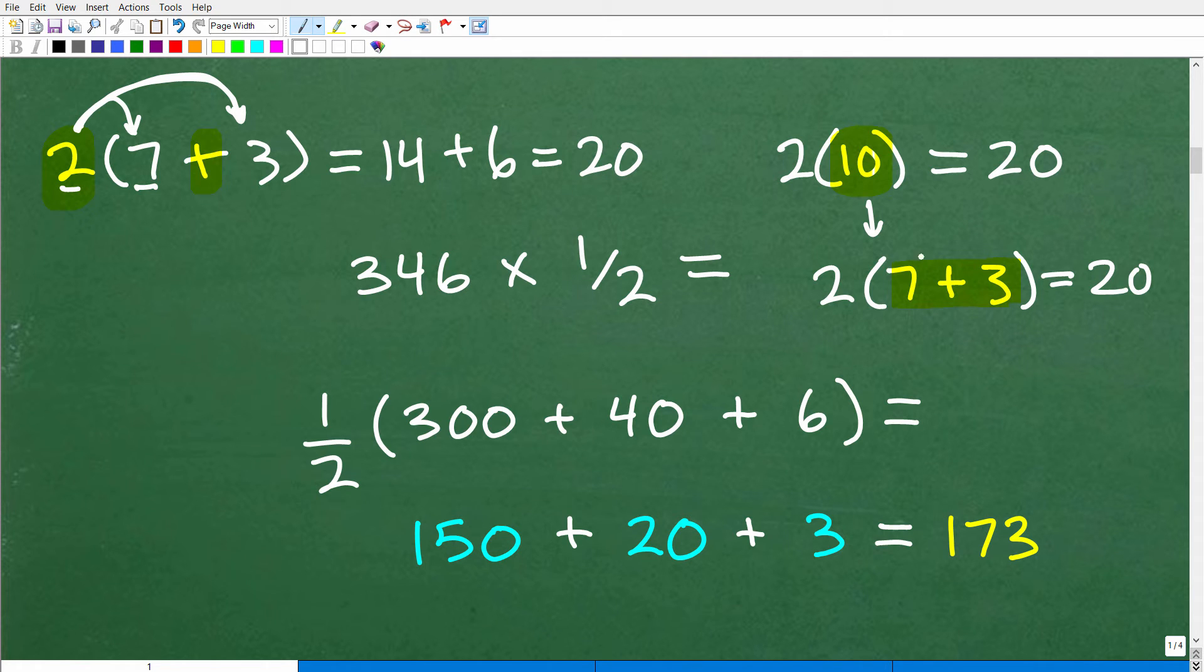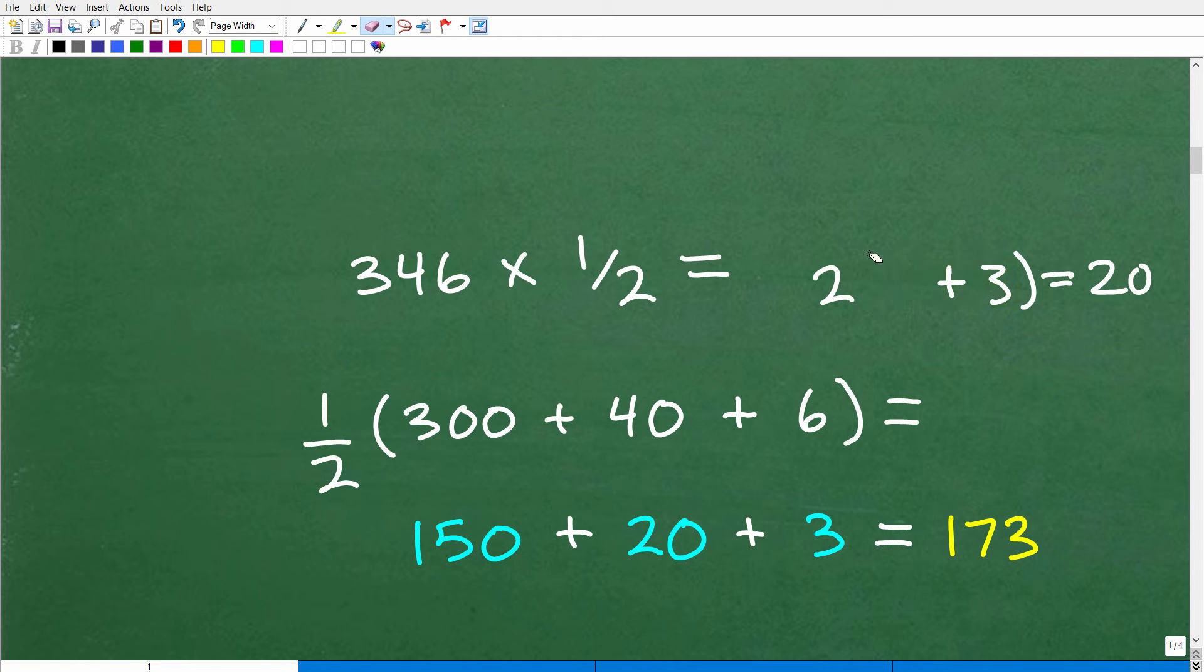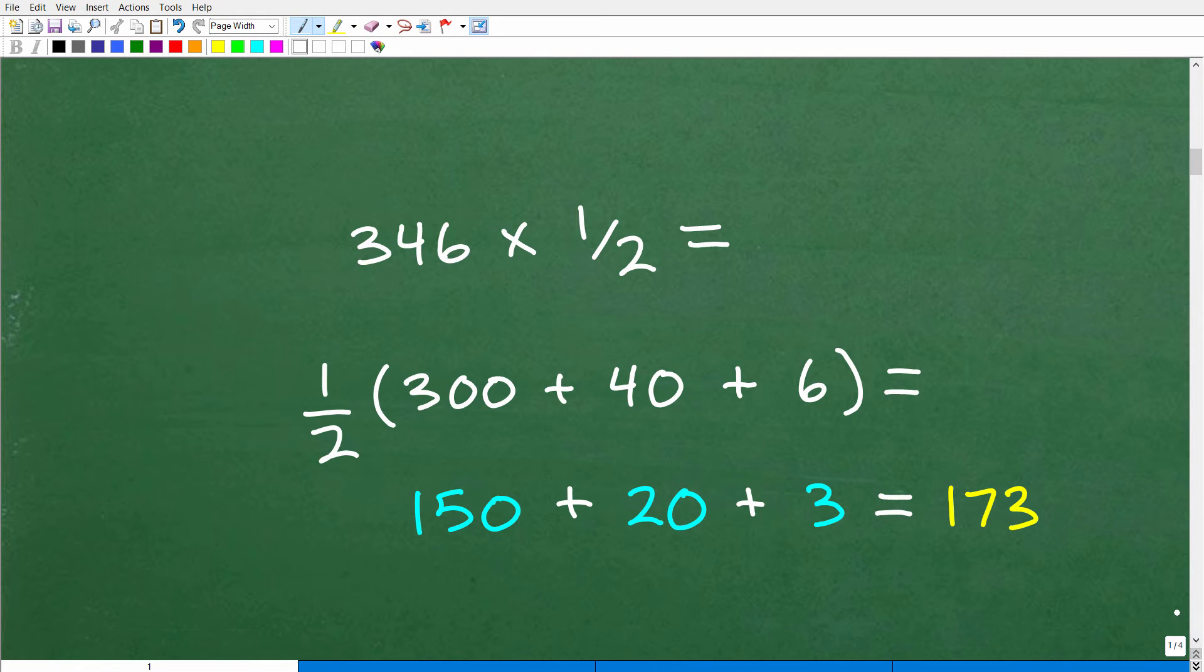Okay. So, again, 2 times 10 is 20. 2 times 7 plus 3 is 20. But what we're doing here is we're applying the distributive property. It's a super handy property. You use it almost continuously in algebra. But you can use it in arithmetic. And it's, like, super awesome to use this property to solve problems like this.